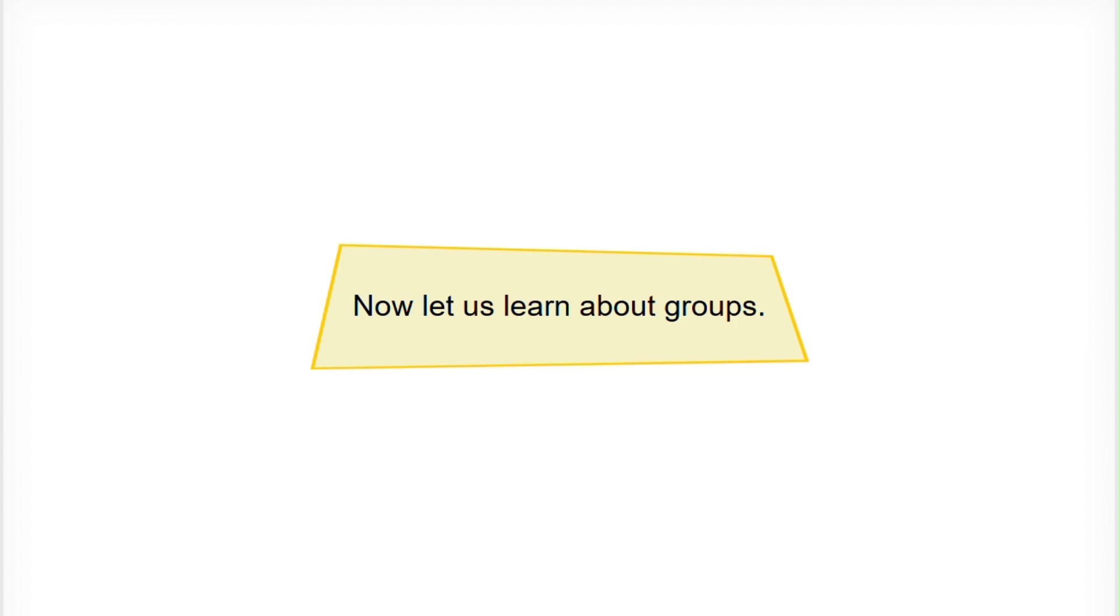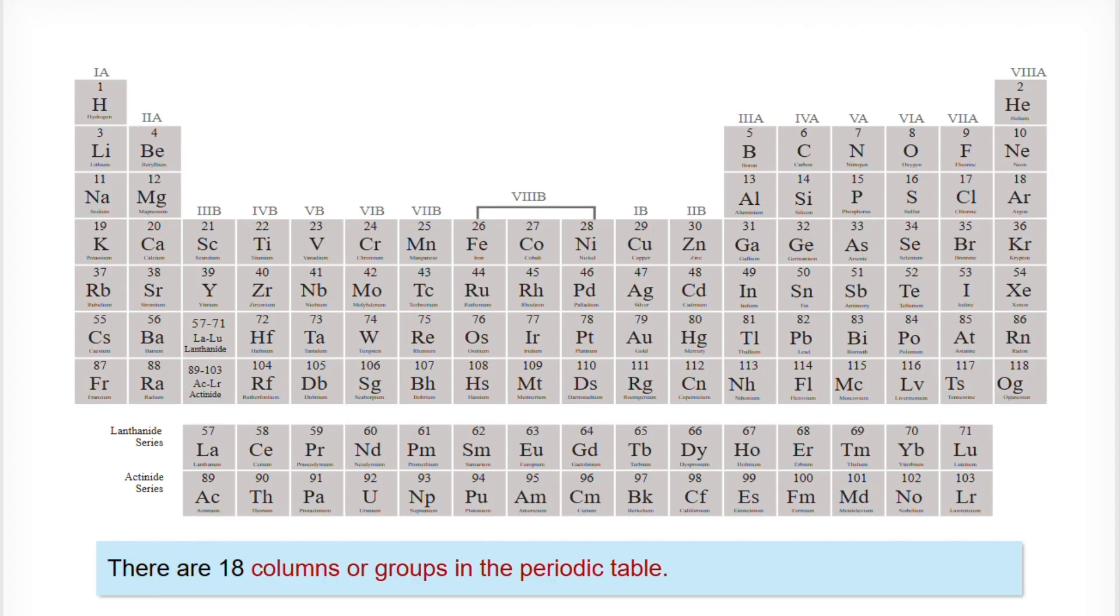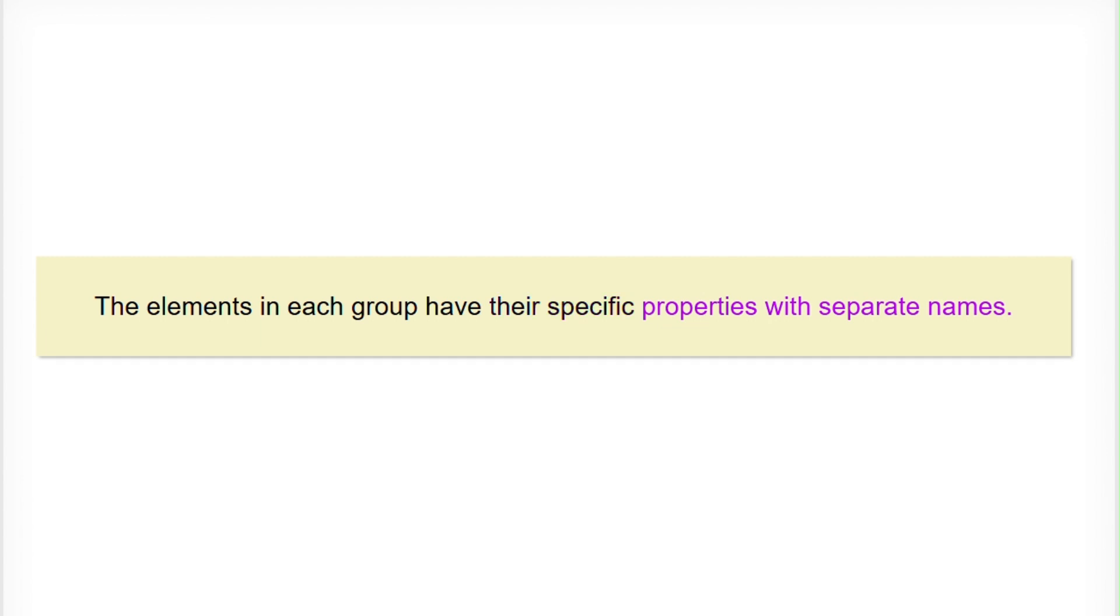Now let us learn about groups. Groups are the vertical columns of the periodic table. There are 18 columns of groups in the periodic table. These 18 columns are further categorized in the subdivisions A and B. The elements in each group have their specific properties with separate names.